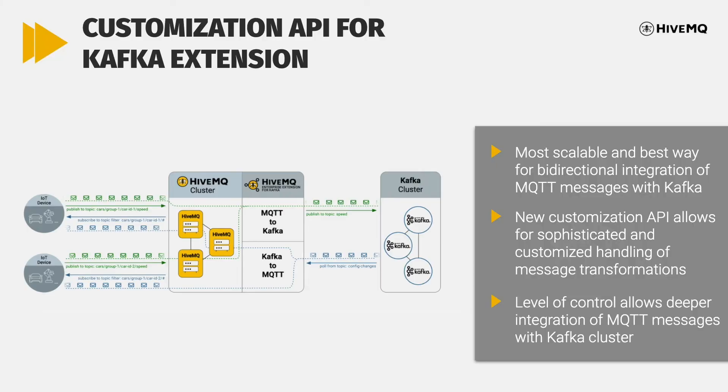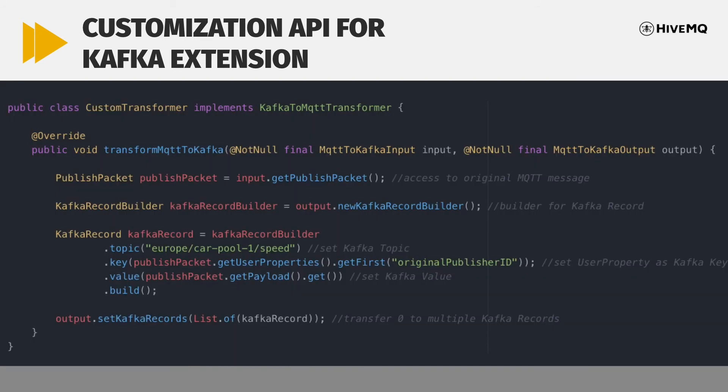Speaking of the Kafka extension, the HiveMQ Enterprise extension for Kafka is the industry's most scalable and best way for bi-directional integration of MQTT messages with Kafka. The newly introduced customization API allows for sophisticated and customized handling of message transformation, basically allowing you to programmatically define how you want to transform, for example, an MQTT message into a Kafka record.